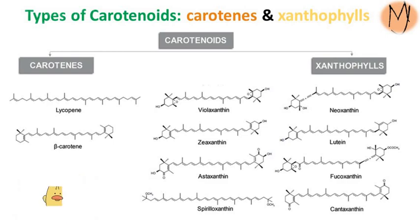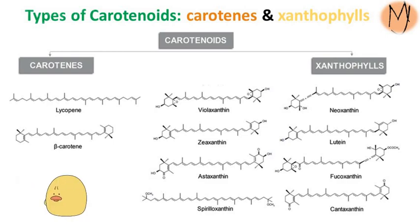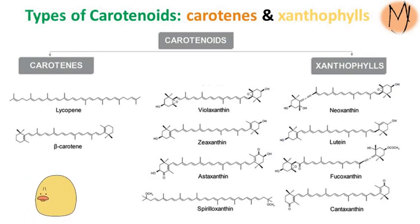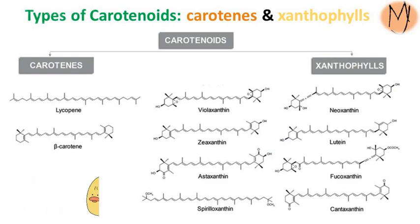The oxygen content of xanthophylls causes them to be more polar in molecular structure than carotenes. The name xanthophyll comes from Greek: xanthos means yellow and phyllon means leaves. Carotenes are orange in color — we hope you can remember carrots.